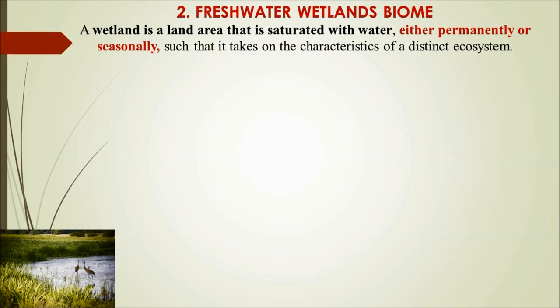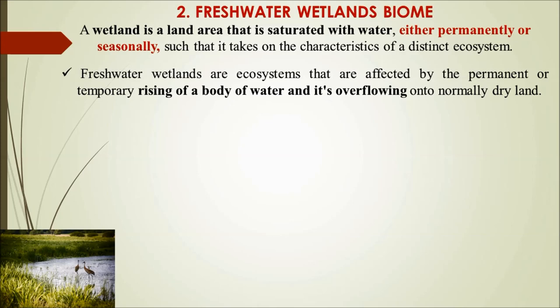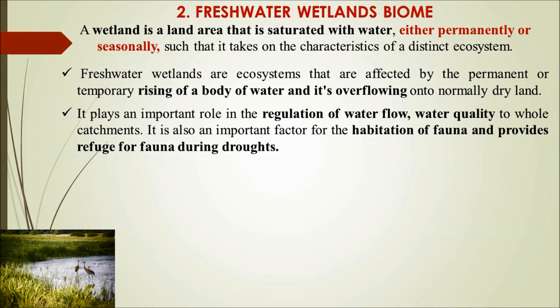The second category within freshwater is freshwater wetlands, which have significantly different characteristics. A wetland is a land area saturated with water — either permanently or seasonally. Freshwater wetlands are ecosystems affected by permanent or temporary rising of a body of water and its overflowing onto normally dry land. Many wetlands are seasonal in nature, rising during monsoon season and then drying up.